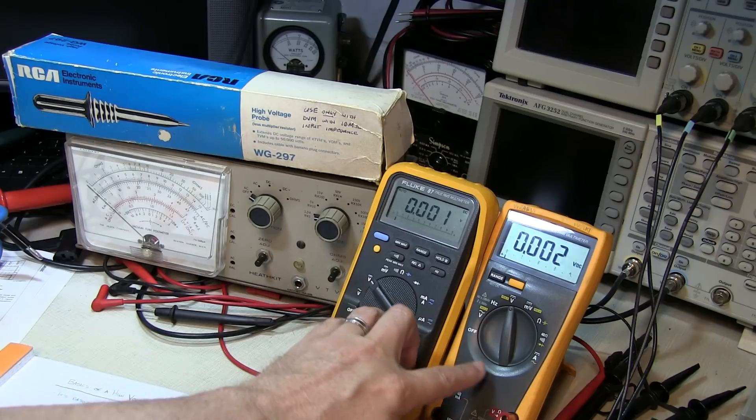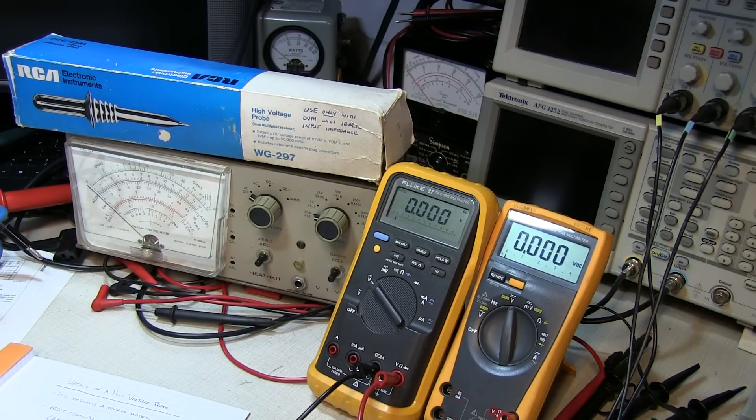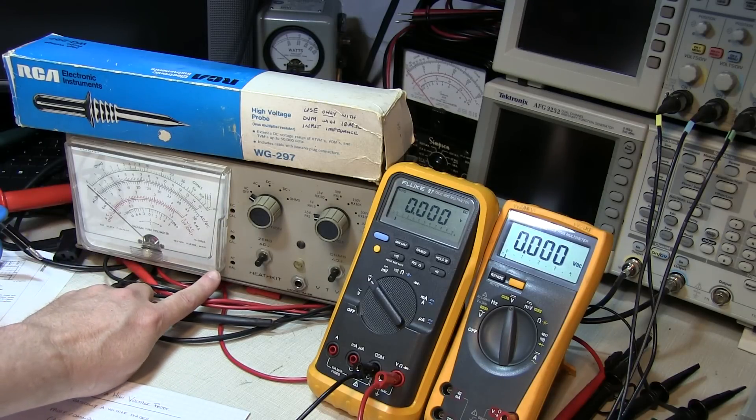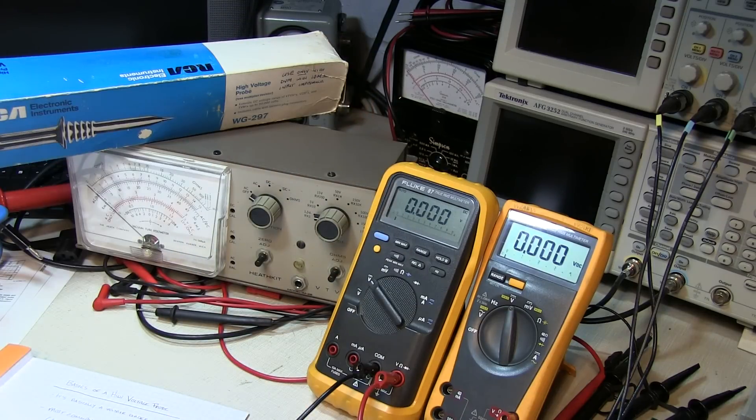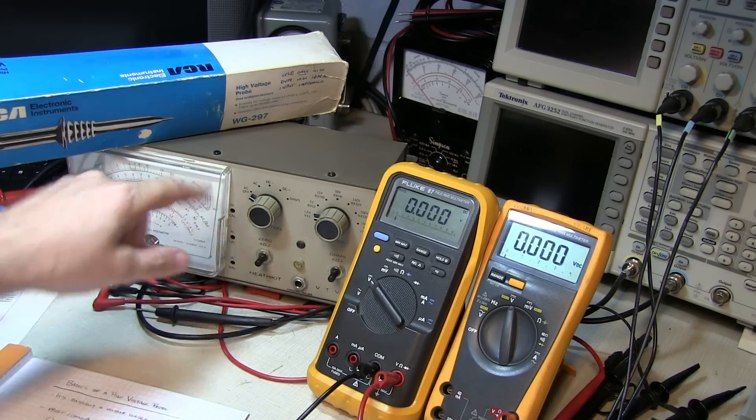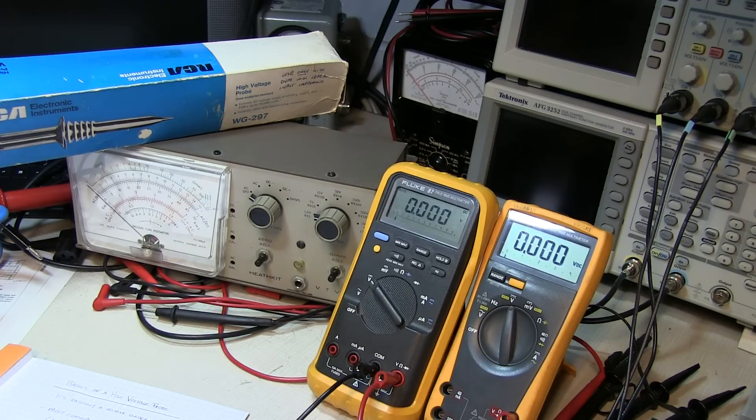And of course, back before we had nice digital multimeters like these Flukes here, most of the meters used for this work were vacuum tube volt meters. They provided the highest input resistance for making measurements. There were meters like the old Simpson 260 in the back there. Analog meters like that were basically passive and had what were called a sensitivity, something like 20,000 ohms per volt or 50,000 ohms per volt. So the input resistance varied depending on what scale you put it on. For a 20,000 ohms per volt sensitivity, if you put it on the 10 volt scale, it would have an input resistance of 200,000 ohms. The vacuum tube volt meters were typically fixed, and it was actually very common for them to have an 11 mega ohm input impedance.